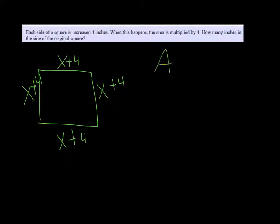So the original area would be S squared. Well, in this case, X squared. Might as well stick with the same variable.